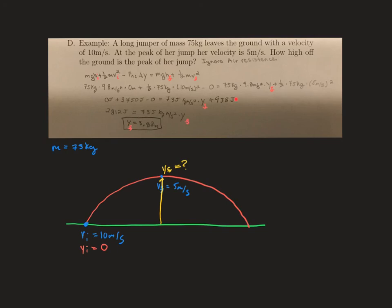Be careful of your algebra here. You cannot combine these two terms, because this has a variable and this does not. So I have to subtract the 938 joules to the other side, which is where I get 2,812. And then I can divide by the 735 to get a max height, or a y final, of 3.83 meters.